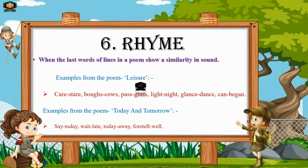The next literary device is rhyme. When the last words of lines in a poem show a similarity in sound, that is rhyme. For example, from 'Leisure': care, stare, boughs, cows, pass, grass, light, night, glance, dance — these words are at the end of the lines and produce similar sounds.